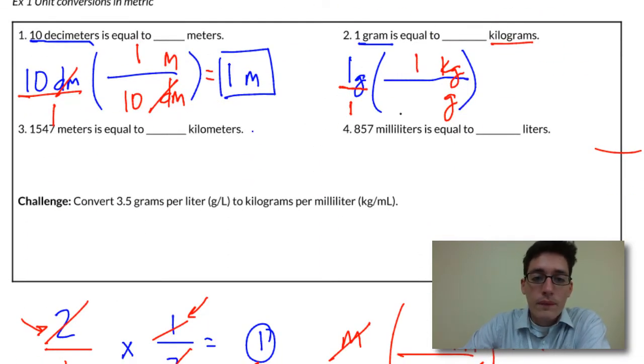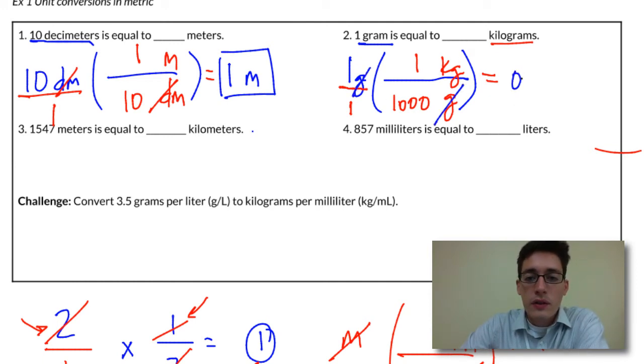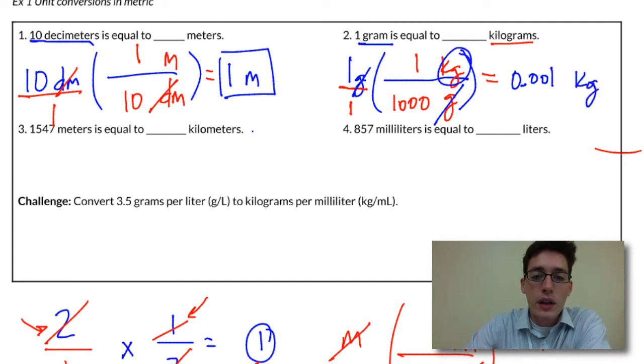1 kilogram is 1,000 grams. And if we carry this through, your grams cancel each other out. 1 times 1 divided by 1,000 gives us 0.001 kilograms. And that kilogram unit comes from right here. It doesn't cancel. It carries through like that.